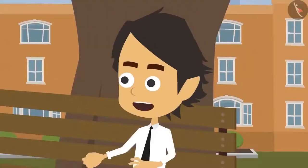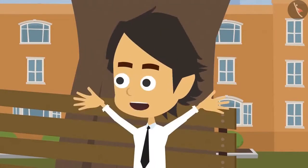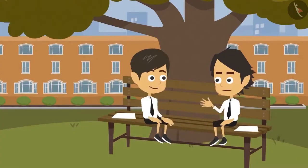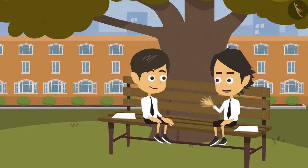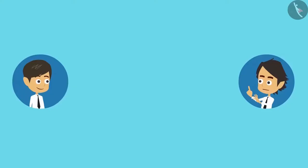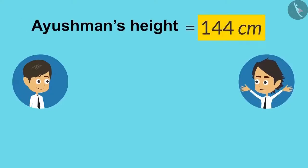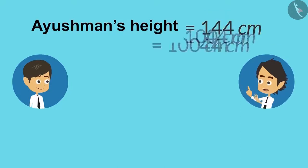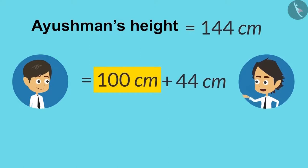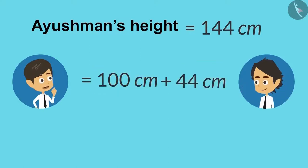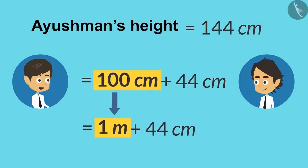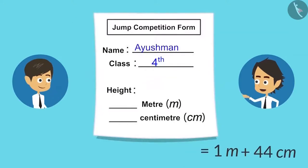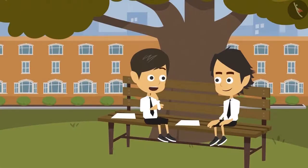How? See, yesterday madam told us that 1 meter has 100 centimeters. So with this information, I can write my height in meters and centimeters. I still do not understand. Can you show me? See, my height is 144 centimeters. Now let's write it like this: 100 centimeters plus 44 centimeters. Now I understand. 100 centimeters equals 1 meter, so we can write 100 centimeters as 1 meter. And now I can write in the form: 1 meter 44 centimeters. Now I can also write my height by converting it into meters.